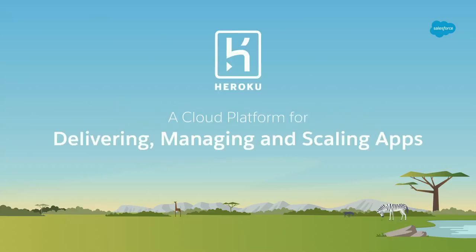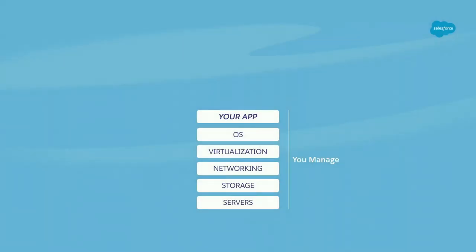So what is Heroku? It's a cloud platform for delivering, managing, and scaling apps — which is good marketing copy, but not particularly useful if you're trying to understand a thing. So I'm going to actually teach you what it means. This is what the world used to look like when you were starting your company. You had a server, and you managed all of this — the application, operating system, virtualization, networking, storage, and servers. You had a single developer working on all of these pieces, and they were probably competent in all of them, but not experts at any of them.